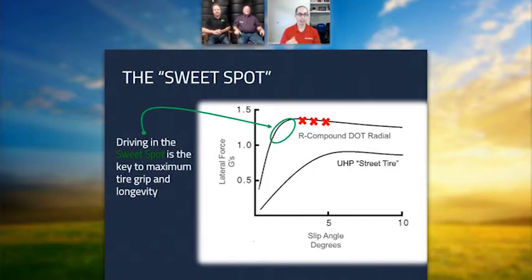But what it is, is that because the R-compound tire builds up lateral force more quickly, there is less forgiveness in the amount of slip angle the tire gets before the break-off starts happening. So the overall limit is higher, but the operating range is narrower, which is - we're going to talk about this a little bit later - but you have to be at a certain skill level to really take advantage of an R-compound tire.